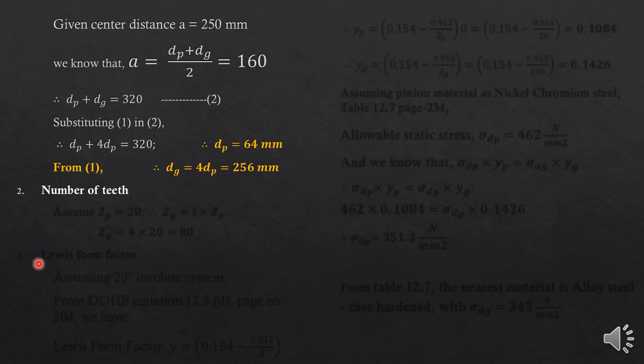Now let's focus on the number of teeth. In this problem there is very minimal data — neither the material of the gear and pinion is specified, nor any information regarding the tooth form. Therefore we cannot calculate the number of teeth directly. We assume that the number of teeth in the pinion is equal to 20. Since the gear ratio is 4, the number of teeth on the gear will be 4 × 20 = 80.